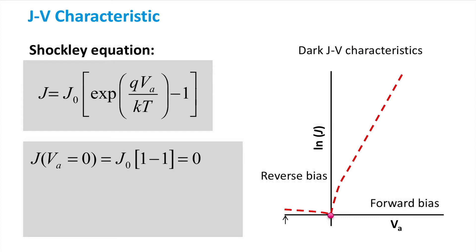As Va moves in the positive direction towards infinity, J exponentially increases. As Va moves in the negative direction towards infinity, the exponential term reduces to zero, and J becomes negative and reaches J0.